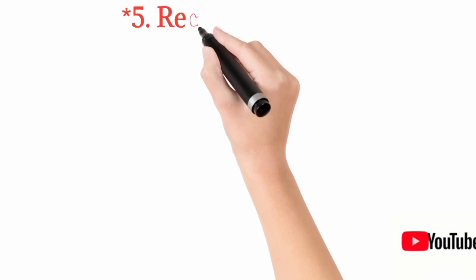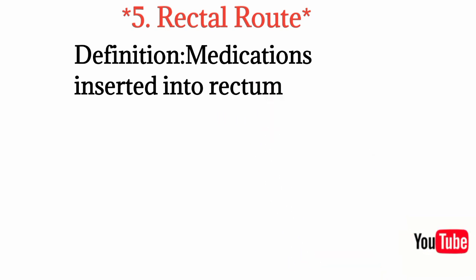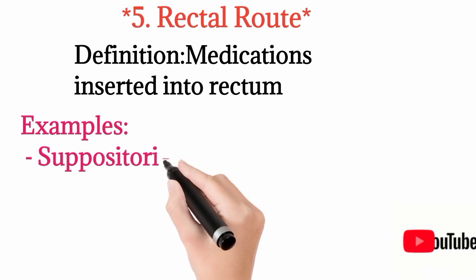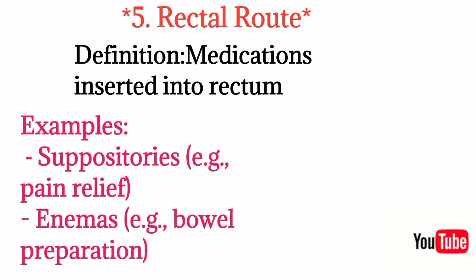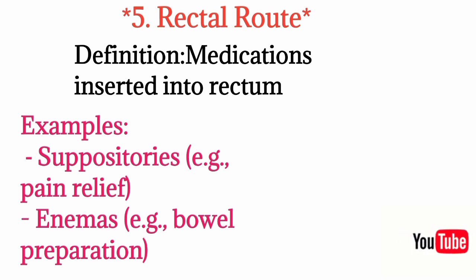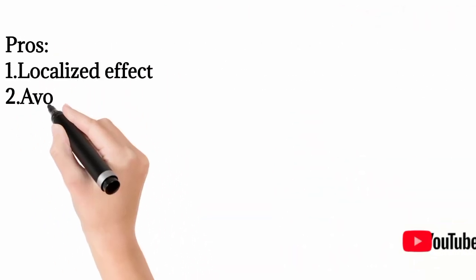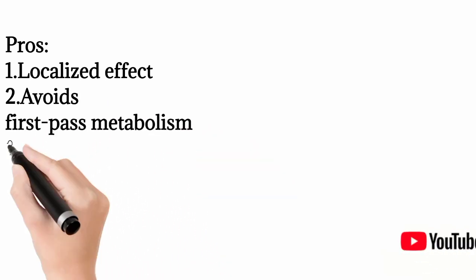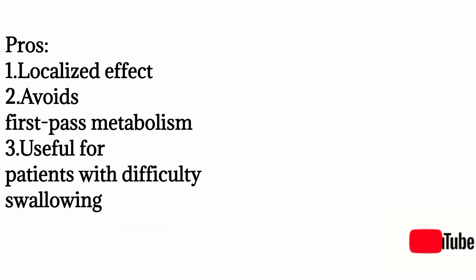Then we have the rectal route, which simply means medication will be given directly into the rectum. Examples are suppositories — given for pain relief into the rectum — and enemas, which are usually used for bowel preparation. Bowel preparation means emptying the bowel before surgery using an enema inserted into the rectum so the rectum becomes empty of stool and feces, which is necessary before surgery. Advantages include localized effect and the ability to avoid first-pass metabolism, so if you want a drug absorbed directly into the bloodstream it can bypass first-pass metabolism through the rectal route.